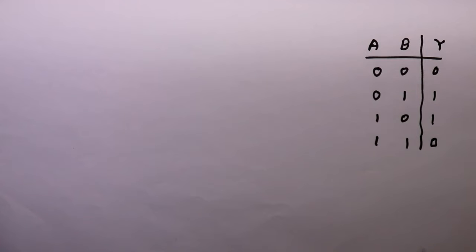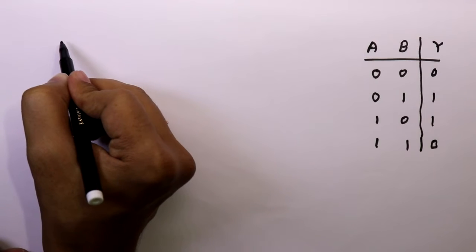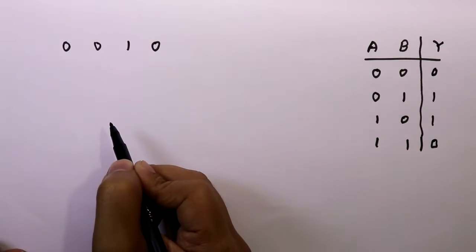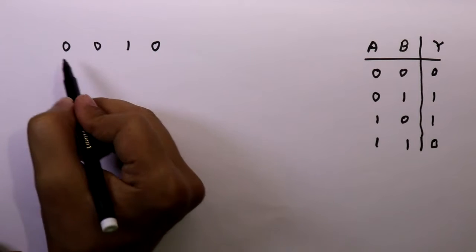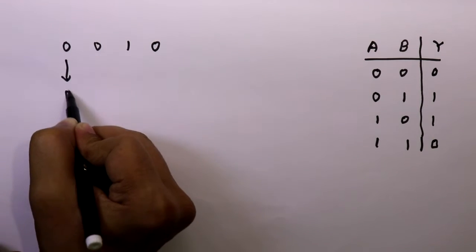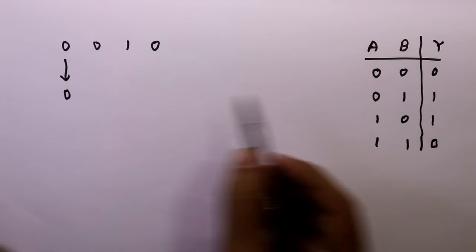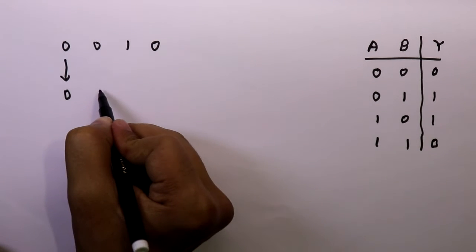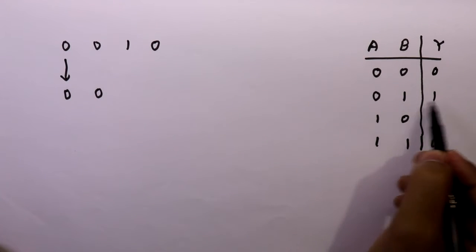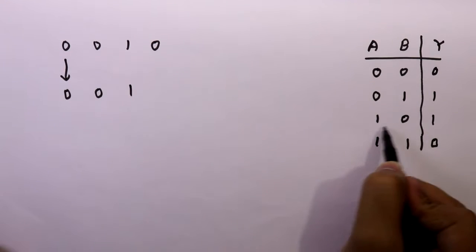Now see another example. Let's say we have a gray code 0010. To find its binary code we write the first 0 as it is. Then 0 XOR 0 gives 0, 0 XOR 1 gives 1, and 1 XOR 0 gives 1.